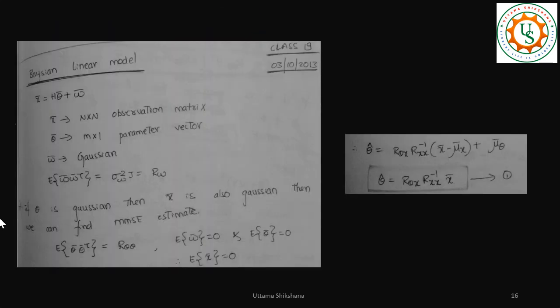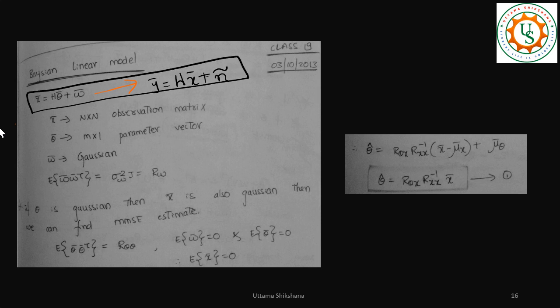Now, coming to the model, we have y bar equals h x bar plus n tilde. This includes interference as well, noise plus interference. Now, based on that, I had a derivation done already. So I am going to present that. Here, the equation is slightly different. Y bar equals h x bar plus n tilde I had considered. Please try to equate the appropriate terms and get the value. So here it is written sigma square I, but let's say for now, this is not sigma square I. It is just Rw, considering the interference.